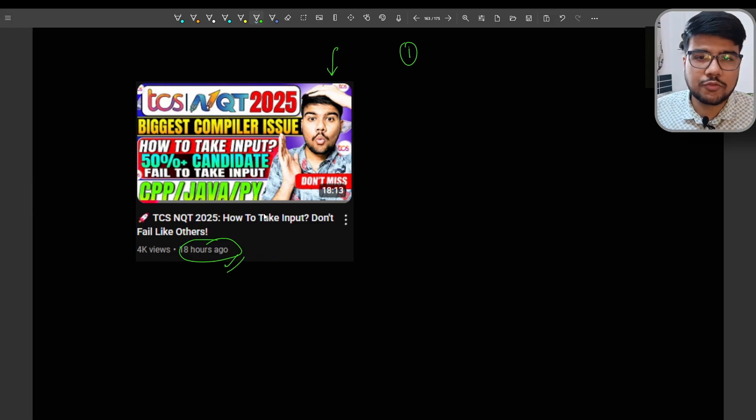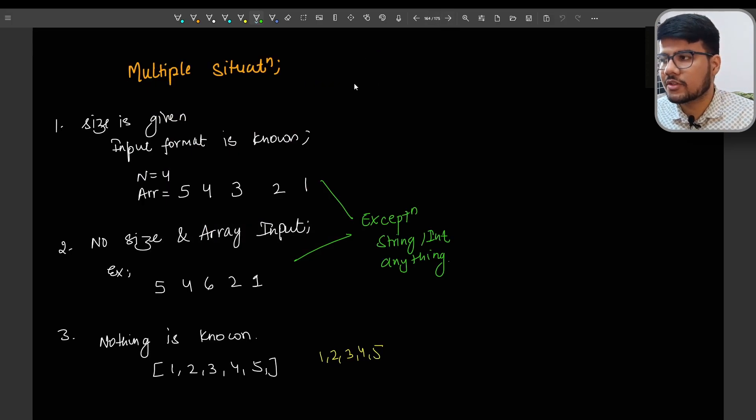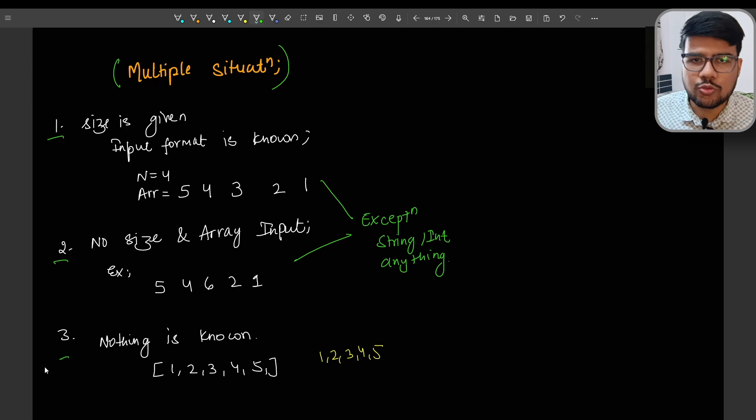Now this is multiple situations. If you have already watched the C++ video, I explained all the situations - there would be two or three situations in your TCS and Qt compiler. Someday they will give you input like four would be your size of the array, five four three two one be the array elements without any end. They give you all the elements.